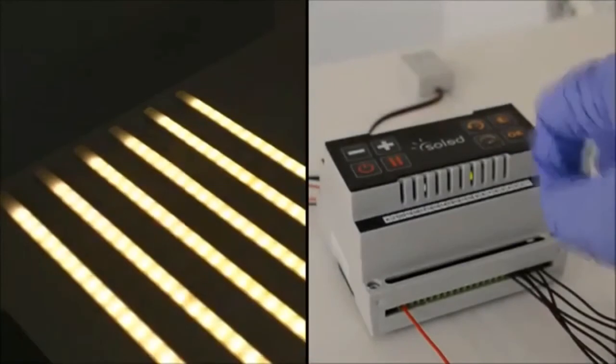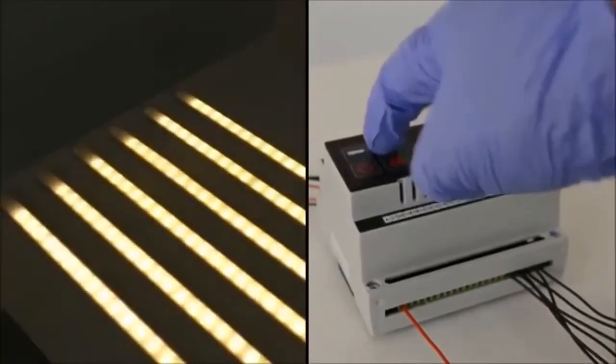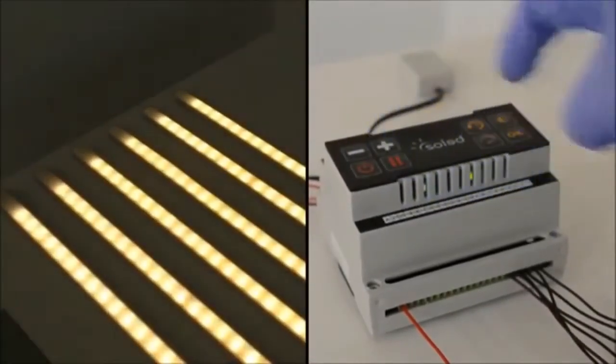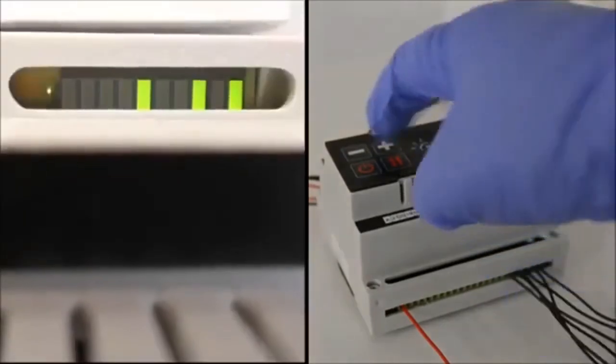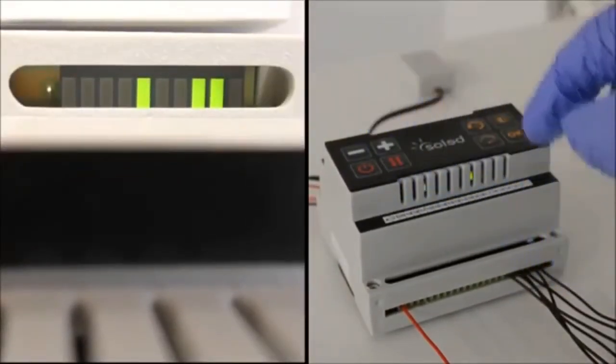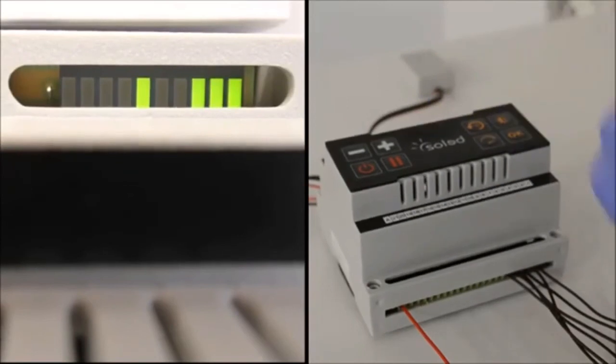To adjust the brightness, press the brightness button on the top right of the control unit and use the plus and minus buttons to set the level. Press OK when you are happy with the level of the light. The LED indicators at the top of the unit show the chosen setting.